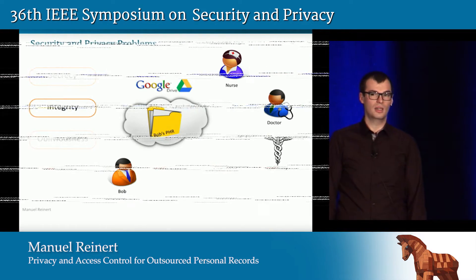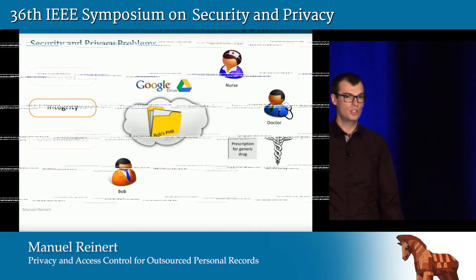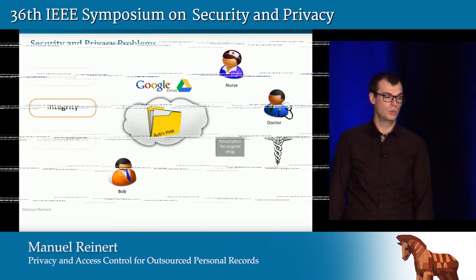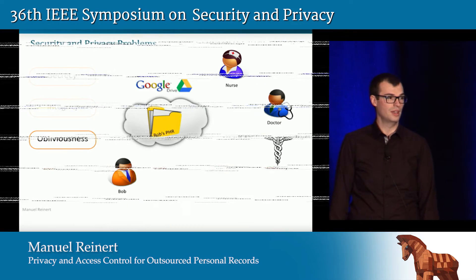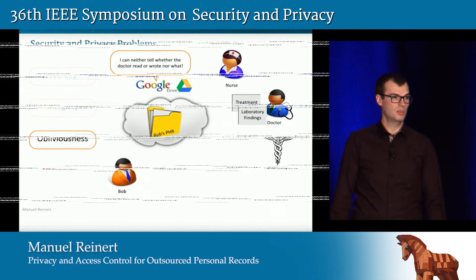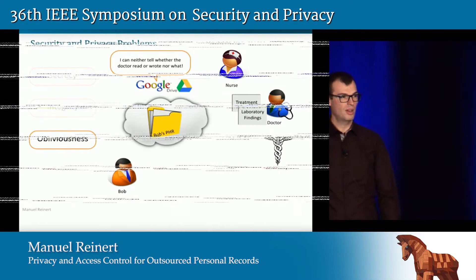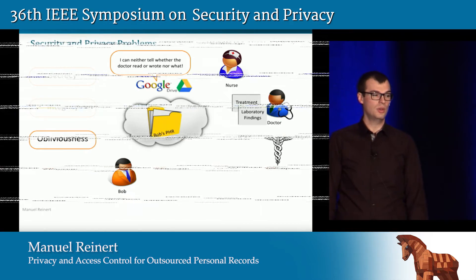Dually, there is the integrity of data — that means if the doctor prescribes a generic drug, which is usually cheaper than an original drug, the pharmacy should not be allowed to change this into the original drug in order to generate more revenue. And finally, we're interested in protecting the patient from the cloud provider, namely obliviousness, meaning that if the doctor retrieves the treatment plan or the laboratory findings and does some operation on it, the cloud provider should not be able to tell which operation he performed, nor which of the two files he retrieved.